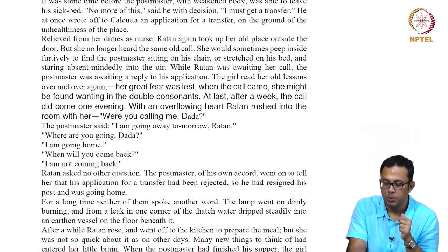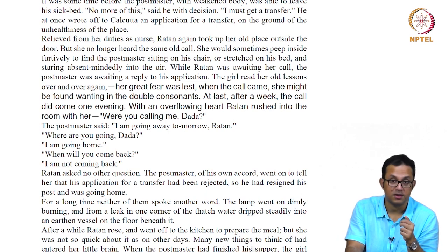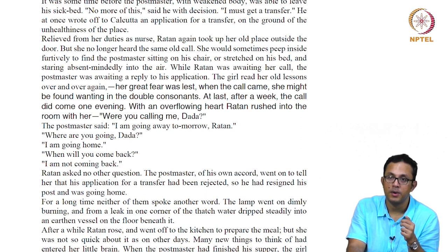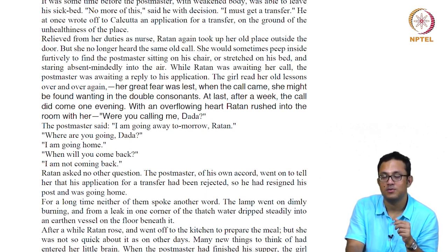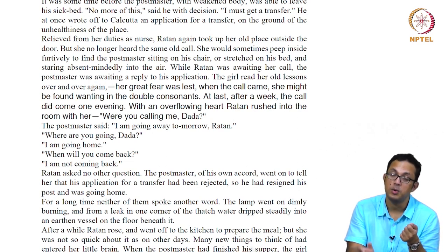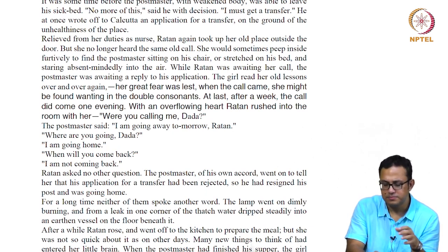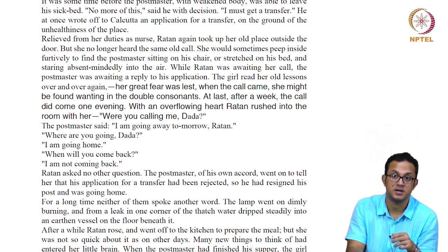After a while Ratan rose and went off to the kitchen to prepare the meal, but she was not so quick about it as on other days. A degree of inertia has crept in — she is dragging her feet. There is no energy left because she is resigned to the fact that he is going away. Two different kinds of resignation are at work: one official and business-like, the other more human and existential. And we have seen earlier how two different kinds of waiting were also in operation. Many new things to think of had entered her little brain.